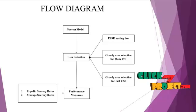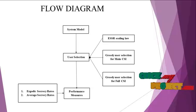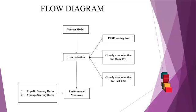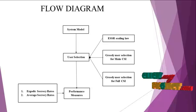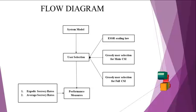In main CSI, the particular user can select the information to the transmitter. For full CSI, the whole users are accessing the secrecy of information. Finally, we calculate the performance measures.